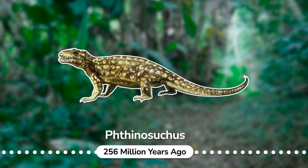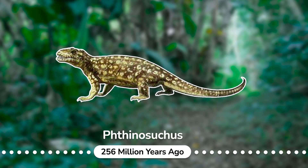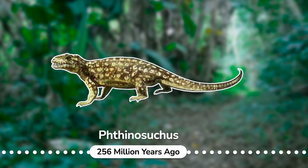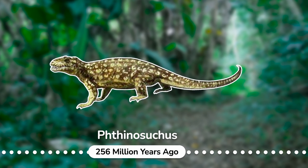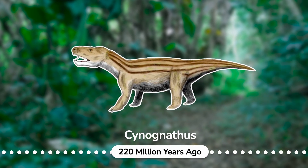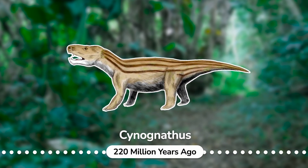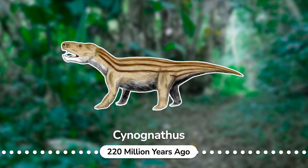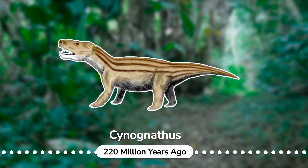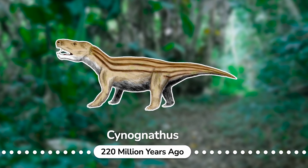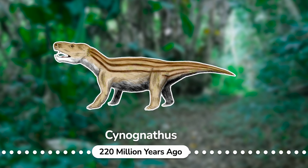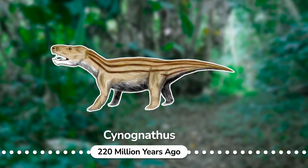Thrinaxodon: an extinct genus of therapsids from the middle Permian of Russia; Thrinaxodon is the sole member of the family Thrinaxodontidae. Cynognathus: an extinct genus of large-bodied cynodontian therapsids that lived in the middle Triassic; fossils have so far been recovered from South Africa, Argentina, Antarctica, and Namibia.